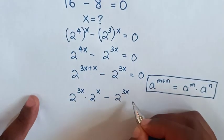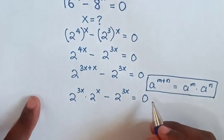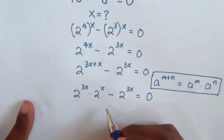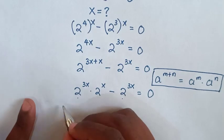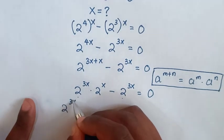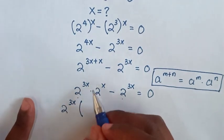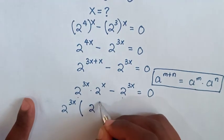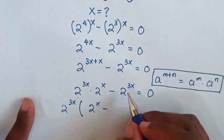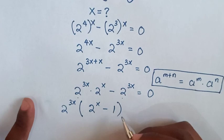Then 2^3x is common, so we take 2^3x out of bracket. Then this divided by this is 2^x minus this divided by this is 1, bracket is equal to 0.